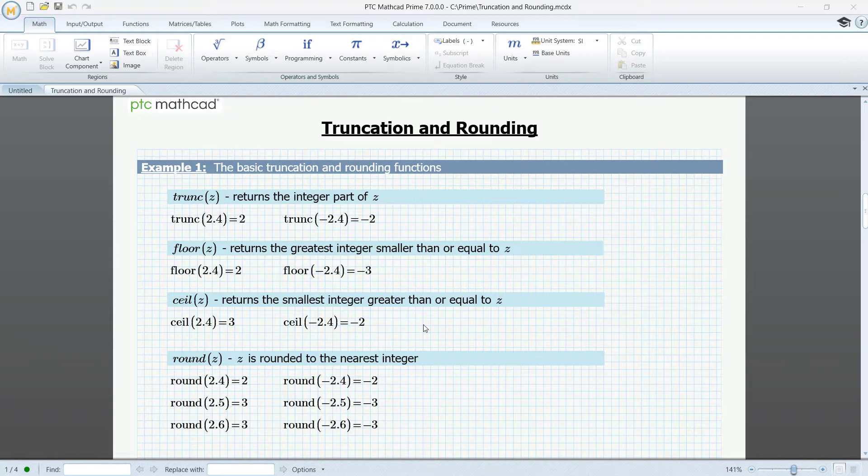Note here that positive and negative numbers are treated symmetrically. The round function also accepts an optional integer parameter.